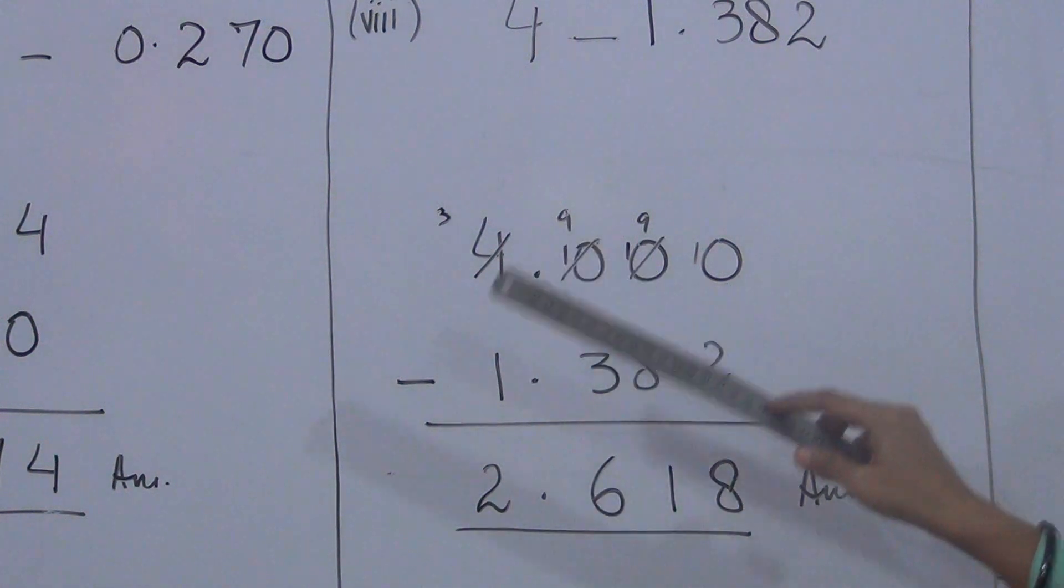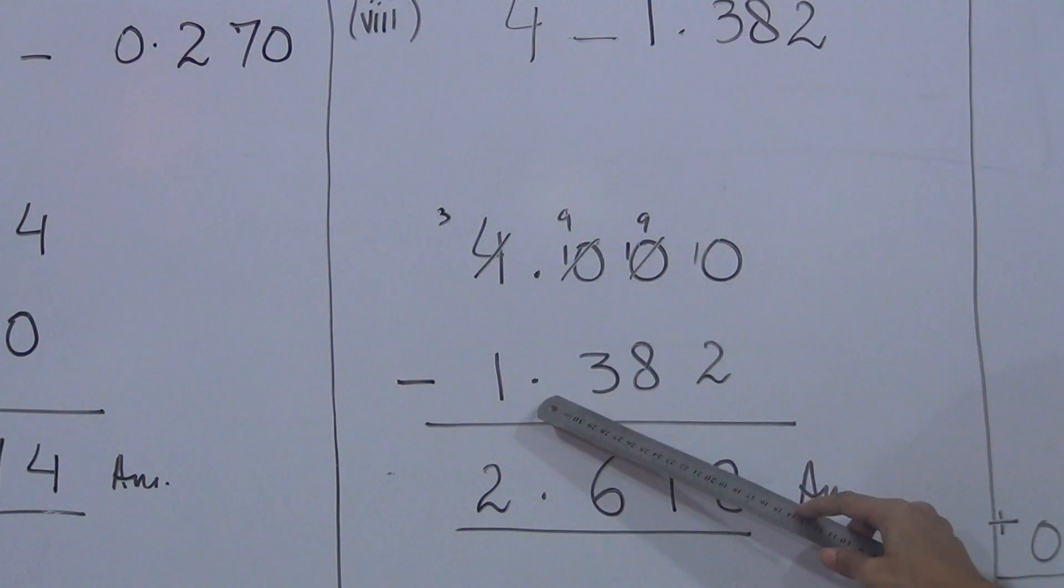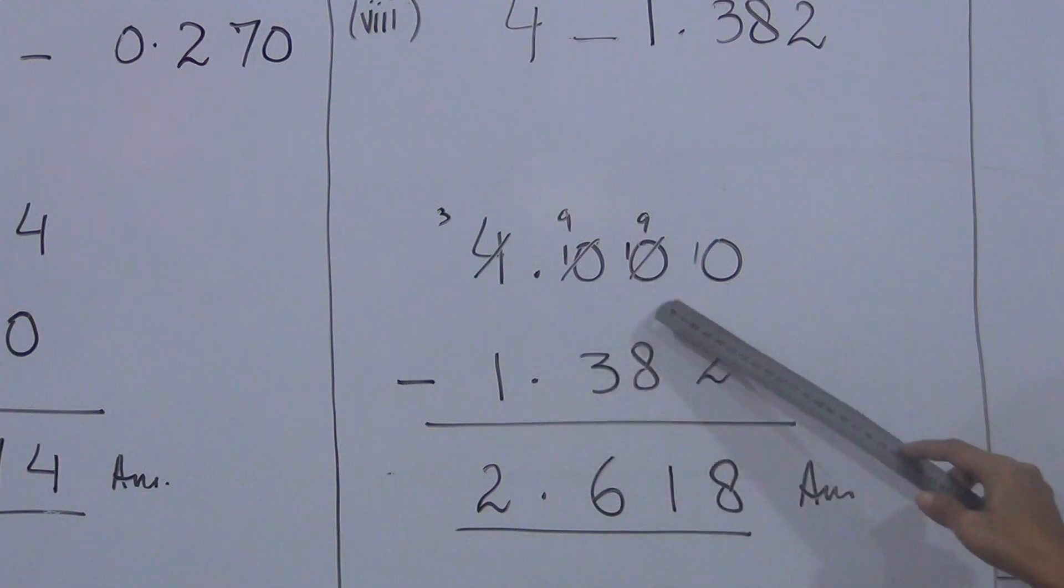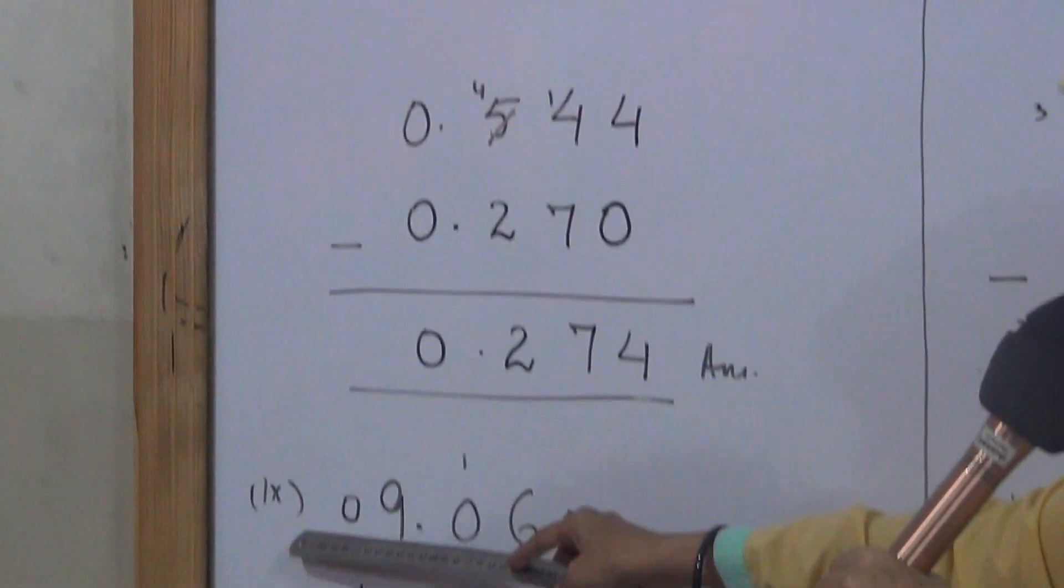In subtraction and addition, point below point line up is necessary. Where there are empty places, we can fill the empty places by zero.